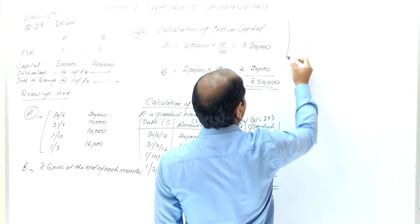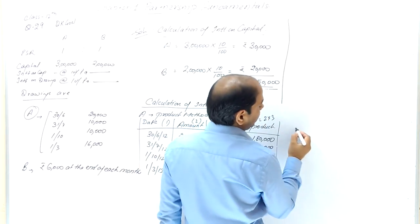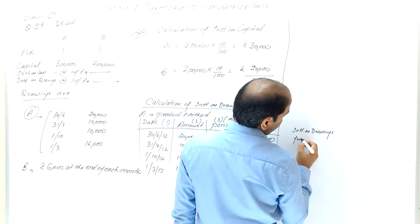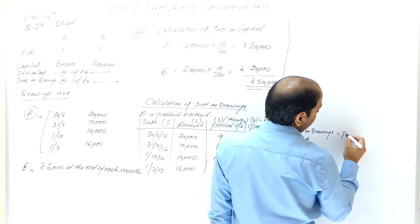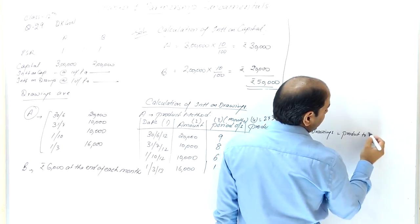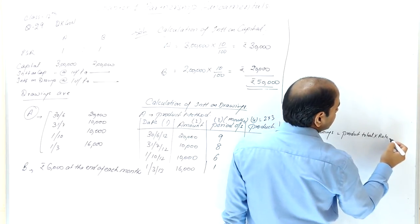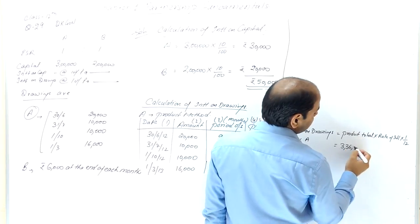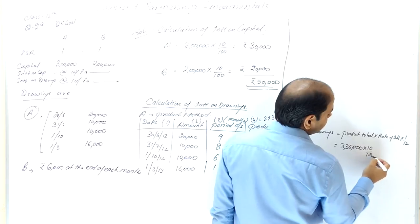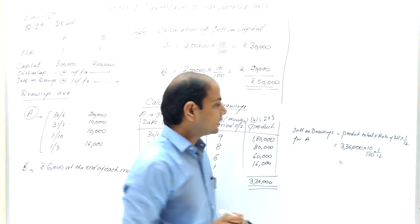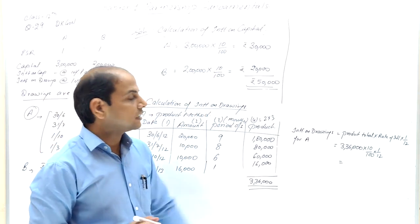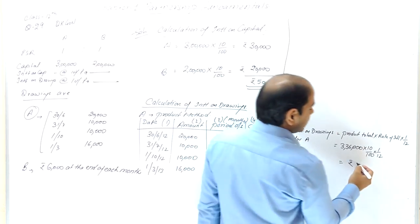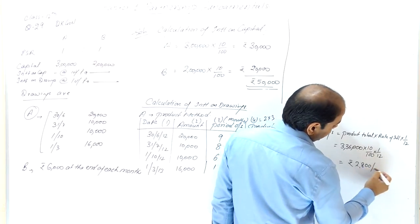Now, interest on drawings for A = Total product × rate of interest × 1/12 = ₹3,36,000 × 10% × 1/12. Take 10% of ₹3,36,000 and divide by 12. This gives ₹2,800. So interest on drawings of A = ₹2,800.